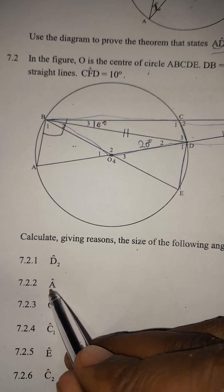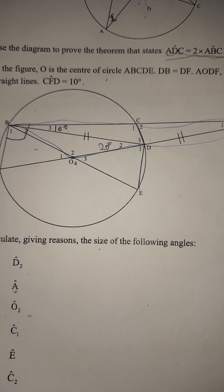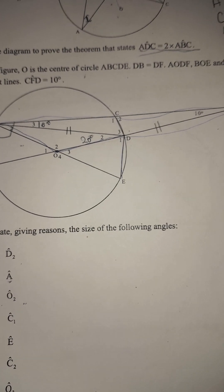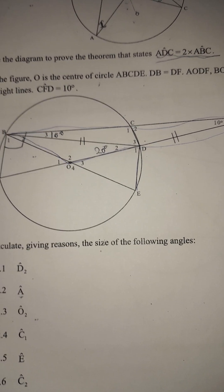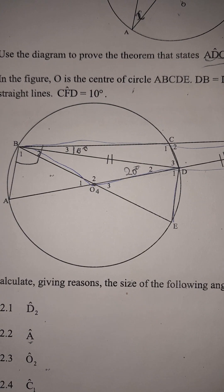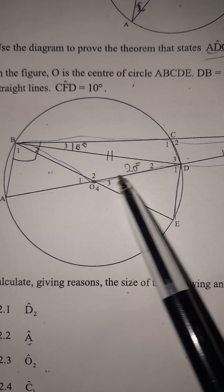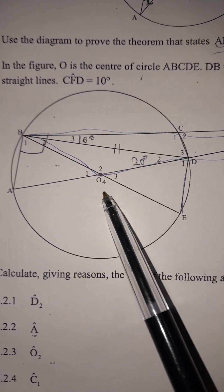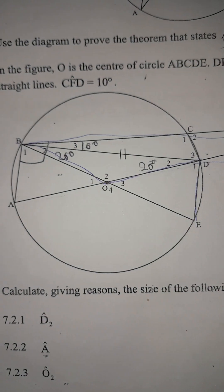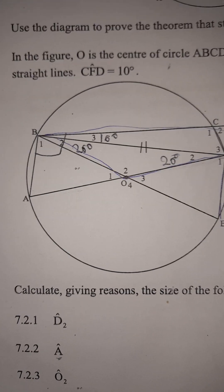Remember we need to find angle A. To work that out, we can see that BO and OD are equal radii. This means angle B2 is also 20 degrees.